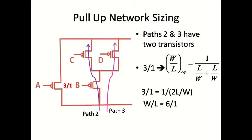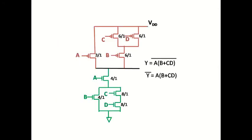That gives W by L equal to 6 by 1. Therefore, transistors with inputs B, C, and D have a sizing of 6 by 1. With this, the transistor sizing is completed: equivalent W by L of NMOS equal to 2 by 1 and equivalent W by L of PMOS equal to 3 by 1.